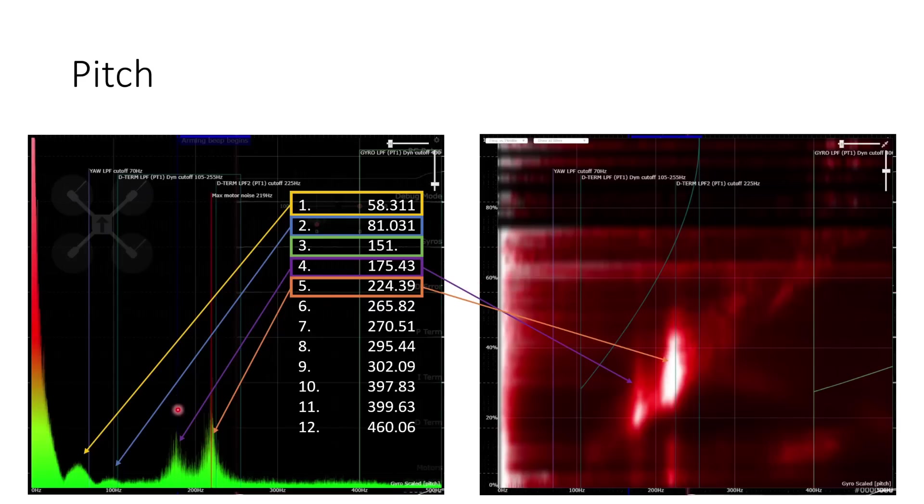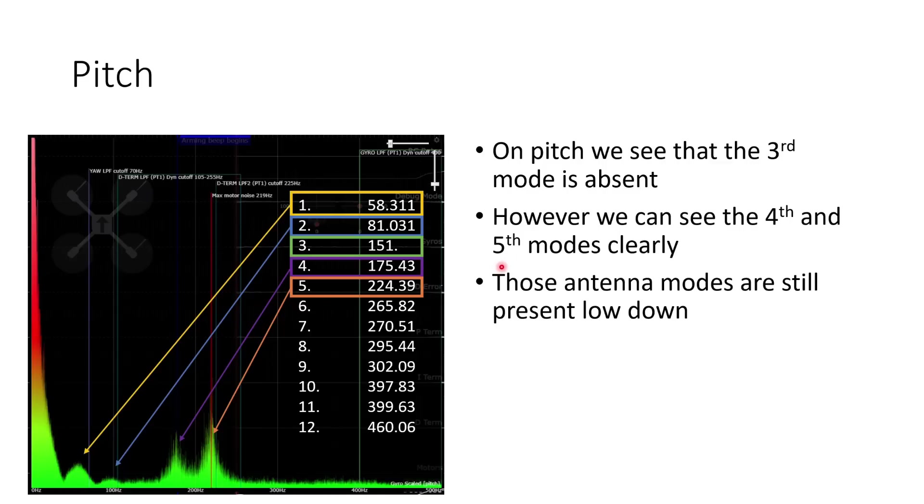If we look at pitch, again, we can see the first two modes appearing quite clearly. And then we can see the fourth resonant mode at 175 Hz, but we don't see much of the 150 Hz resonance at all. And the 225 Hz resonance also appears quite clearly as a sharp peak. And if we look at the waterfall plot, we can see again these characteristic vertical stripes of a frame resonance. We can really see that those antenna modes, which we're going to discuss in more detail later on, are still present low down on the pitch axis. So they're affecting both pitch and roll pretty much equally.